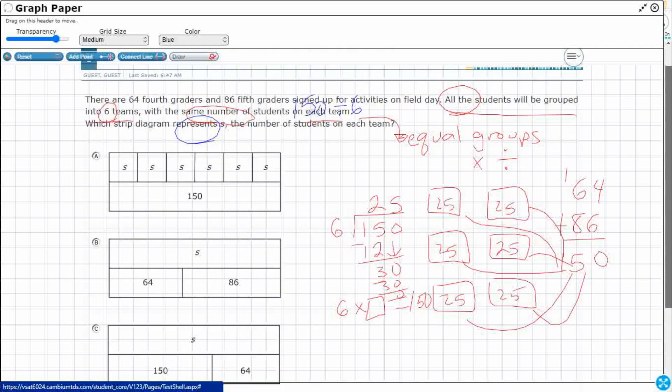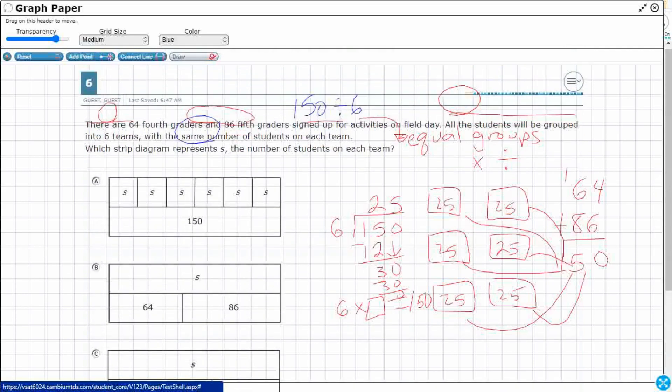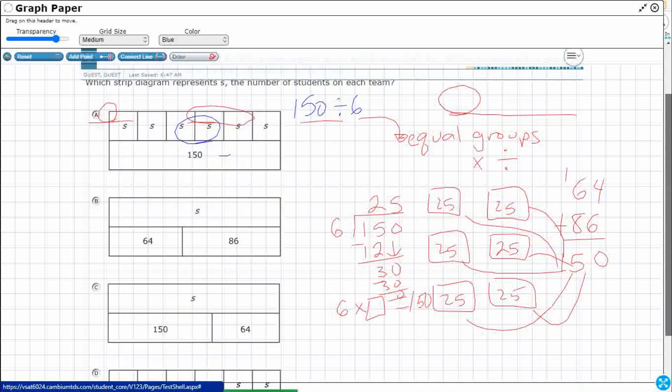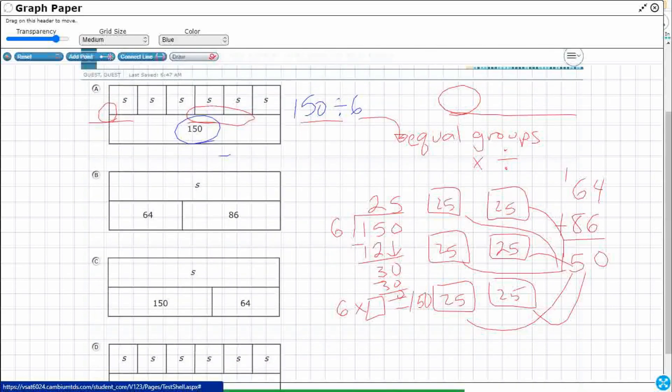Now, remember, we're trying to find S. S is the number of students on each team, right? So this would work if we did, you know, sets of 25. This is how many kids are there, 64 plus 86. That's going to get you 150, but there's not 150 kids on each team. So no on B.